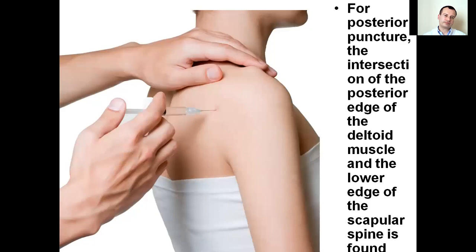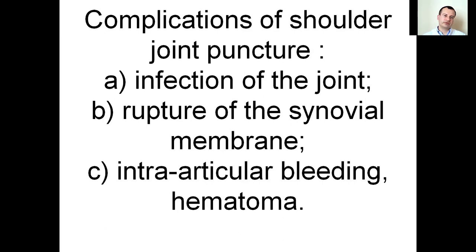For posterior puncture, the posterior edge of the deltoid muscle and the lower edge of the scapula spine are found. The needle is inserted and pointed forward to a depth of 5 cm in the direction of the coracoid process of the scapula. Complications of shoulder joint puncture include infection of the joint, rupture of the synovial membrane, and intraarticular bleeding hematoma.